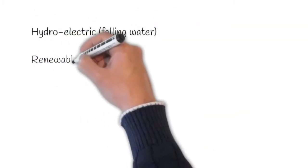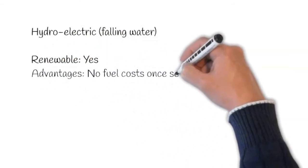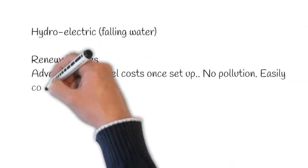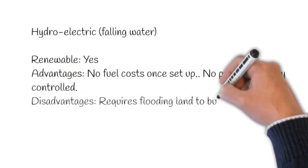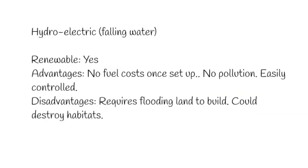Let's go through some more energy types. Hydroelectricity, i.e. falling water. It is renewable. The advantages are that no fuel cost once it's set up, no pollution, and it's easily controlled. However, the disadvantages are that it requires flooding land to build, which could destroy habitats.